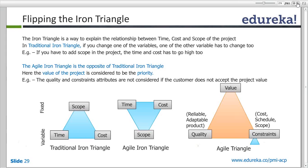In agile, time and cost are fixed but the scope is variable. Since we adapt and permit changes, we change the scope based on feedback loops. The time and cost remain fixed while the variable part becomes the scope — this is called the flipping of the iron triangle.